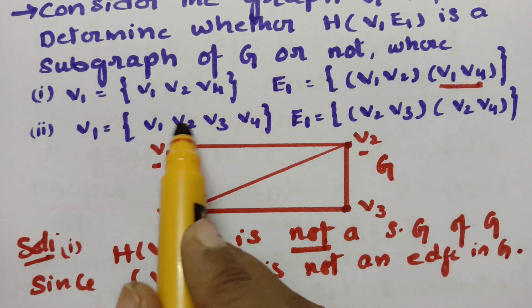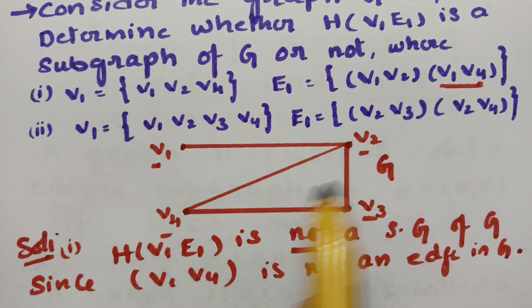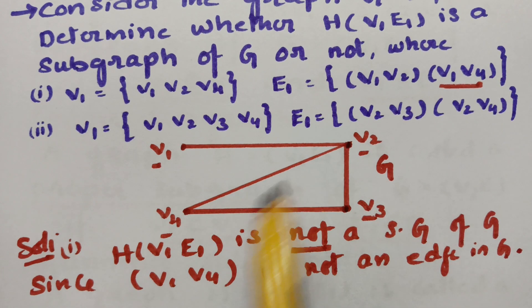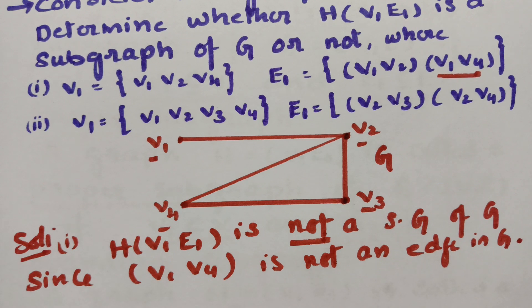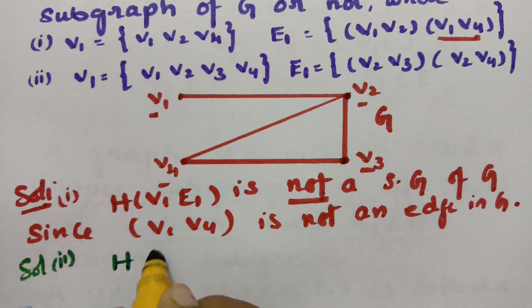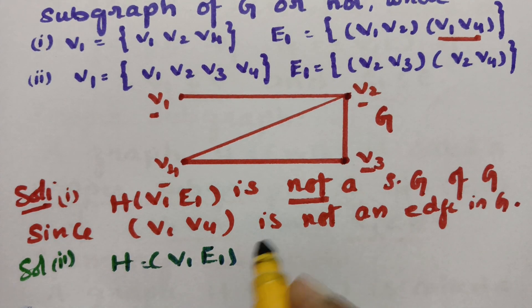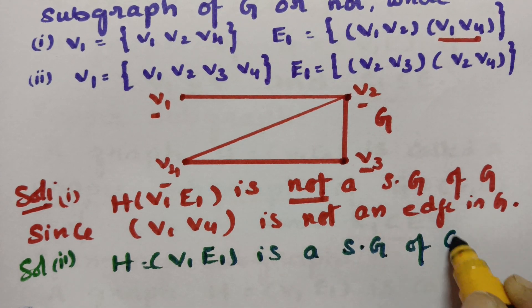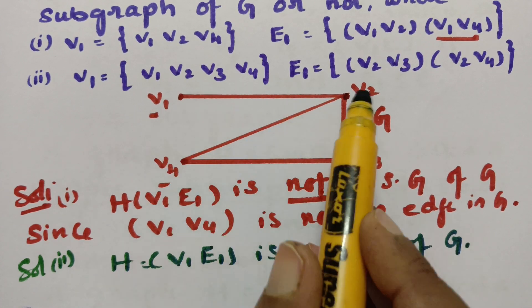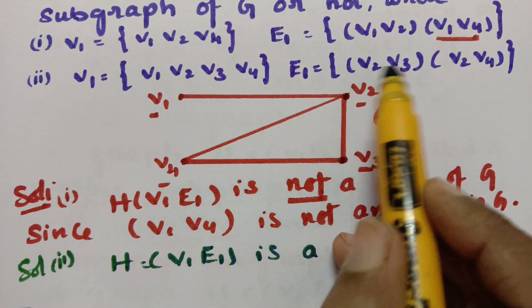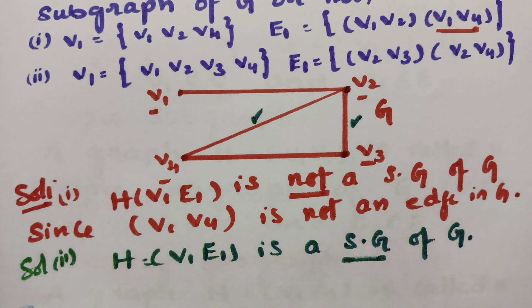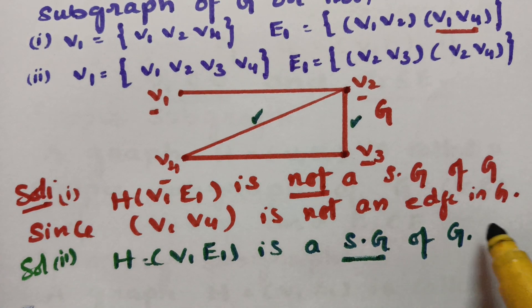In solution 2, V1 = {V1, V2, V3, V4} and the edge set includes V2-V3 and V2-V4. Checking the main graph G — V2 to V3 has an edge and V2 to V4 also has an edge. Since all four vertices V1, V2, V3, V4 are from the main graph and all the edges are present in G, we say that H = (V1, E1) is a subgraph of the main graph G = (V, E).